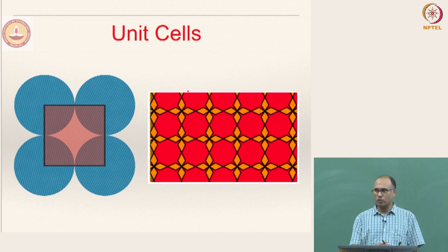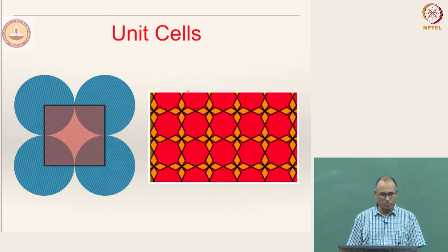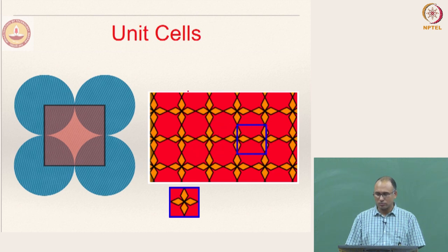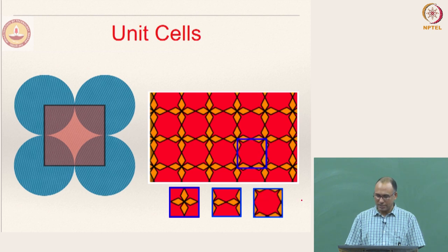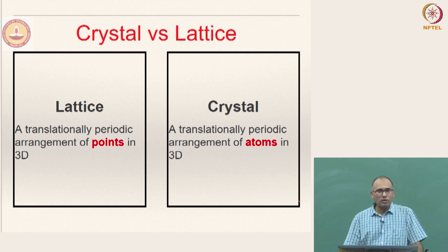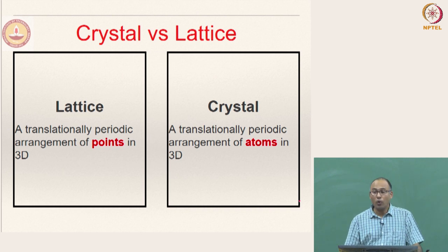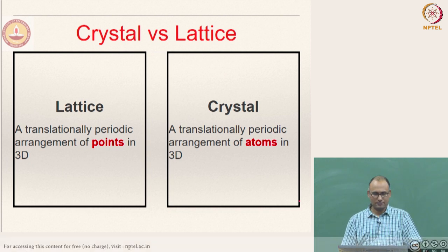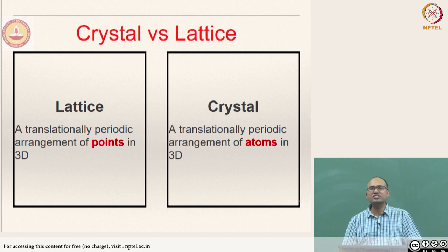Looking at a two-dimensional map, we identified different kinds of possible unit cells — one geometry as one possible unit cell, another geometry as another possible unit cell, and so on. Now, we have only looked at the definition of lattice. What do we mean by crystal, and what is the difference between crystal and a lattice? A lattice by definition is a translationally periodic arrangement of points in three dimensions.